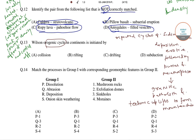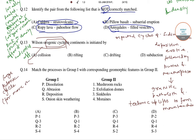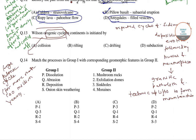The Wilson orogenic cycle is described as a large tectonic cycle lasting for more than 100 million years. The cycle starts with the break-up of a continent and the growth of an ocean at a newly formed mid-oceanic rift system.